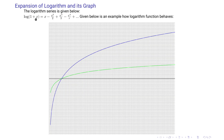The logarithm series expansion is given as: log of (1 plus x) equals x minus x² over 2 plus x³ over 3 minus x⁴ over 4 plus x⁵ over 5 and so on.